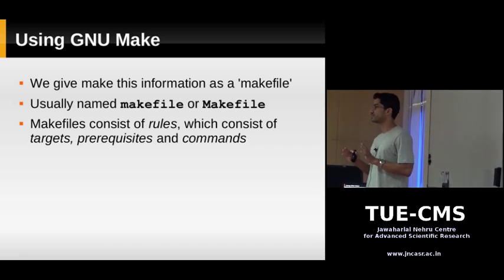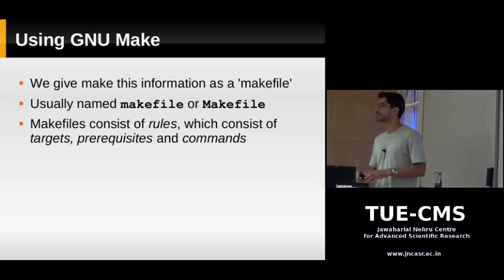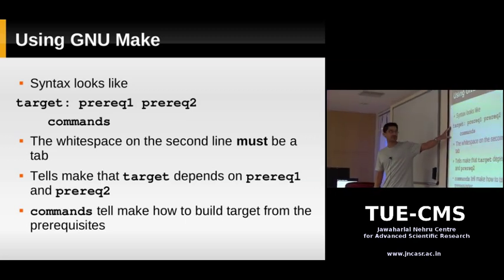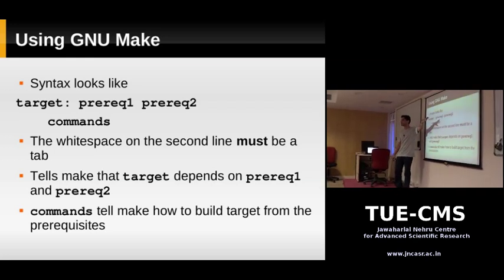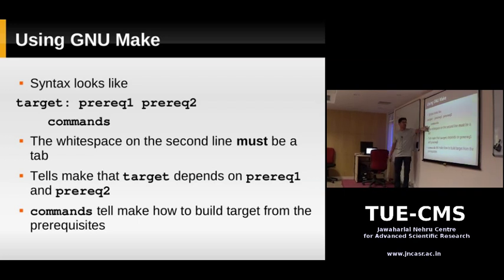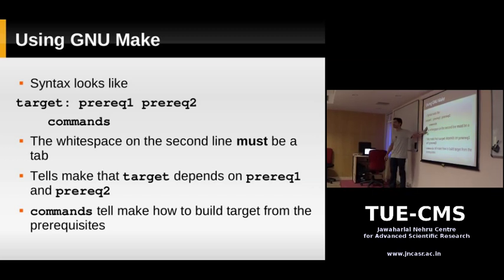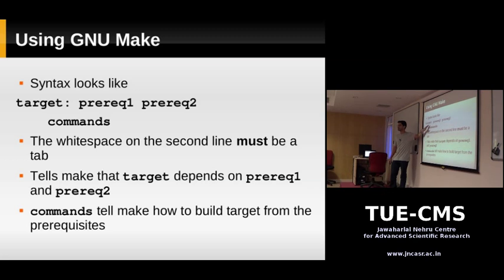A makefile consists of what are called rules. Each rule consists of a target, one or more prerequisites, and commands. The syntax is: target, colon, list of prerequisites, then the command on the next line. It's very important that the whitespace before the command is a tab character — this is compulsory as part of the makefile standard. If you put a space instead of a tab, make will complain.